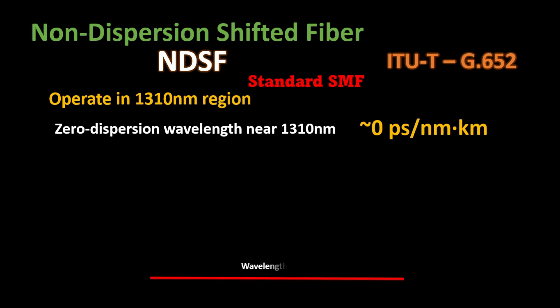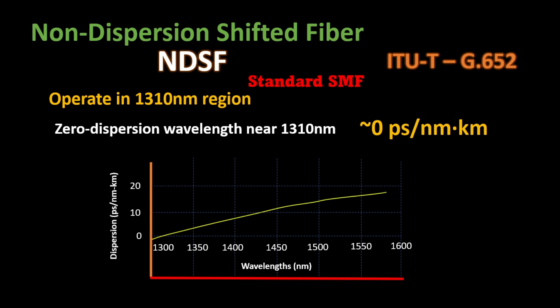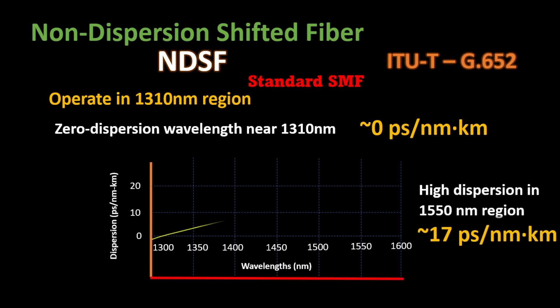Let's take a look at the graph below. Here we have wavelength in nanometers and dispersion in picoseconds. As you can see, NDSF has a zero dispersion point around 1310 nanometers. Also, if you look, it exhibits high values of dispersion in the 1550 nanometer region, around 17 picoseconds.